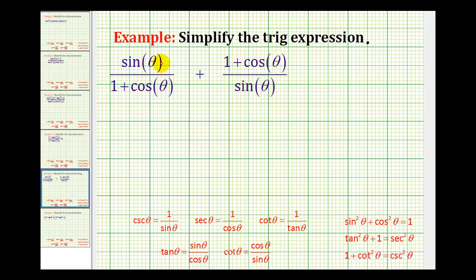So we'll multiply the numerator and denominator of this first fraction by sine theta. We'll multiply the numerator and denominator of the second fraction by one plus cosine theta. Notice how both denominators contain the same factors now.